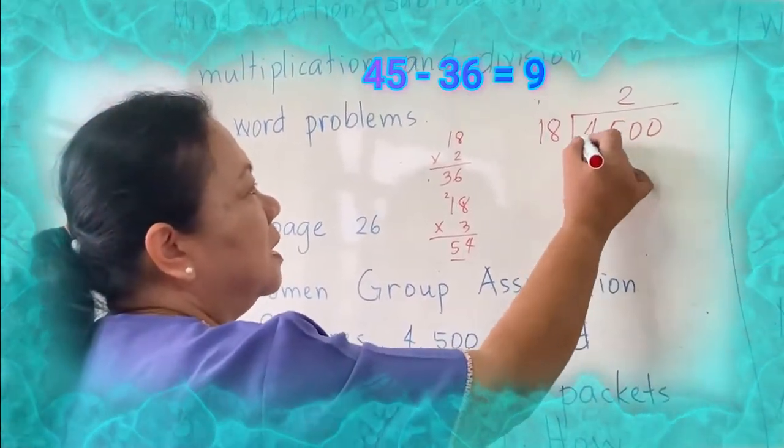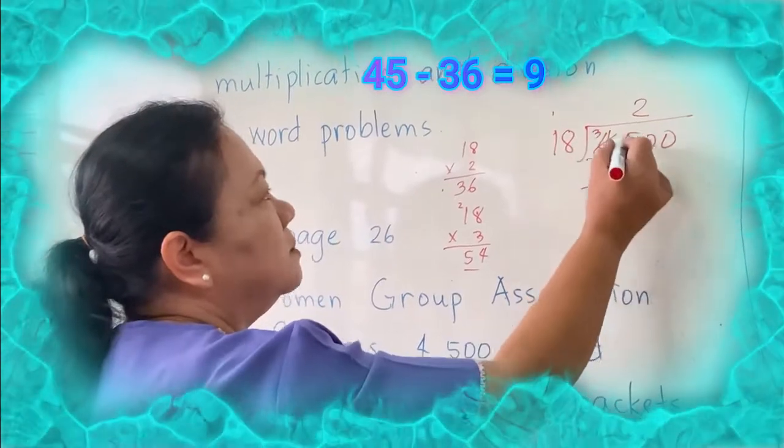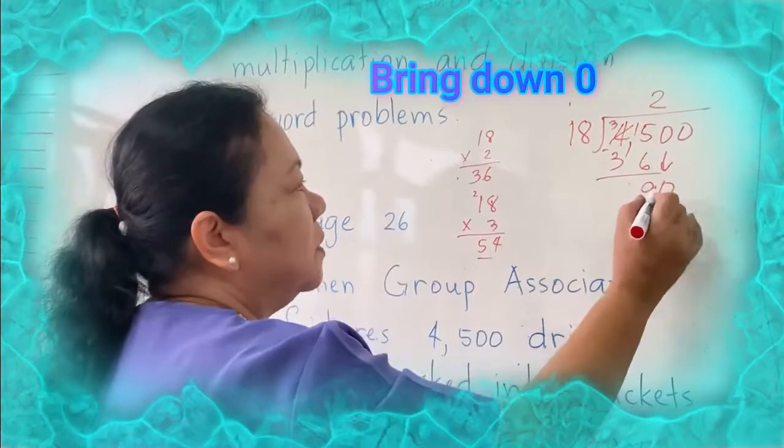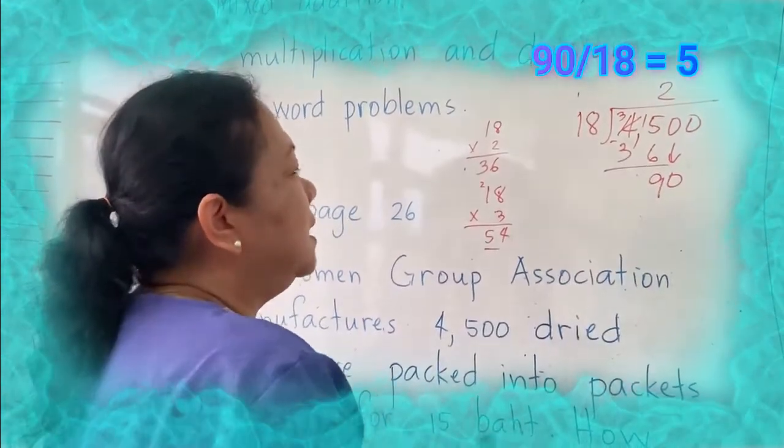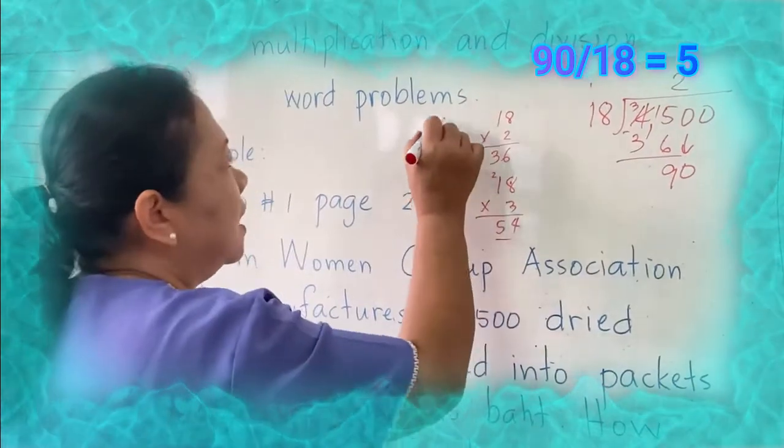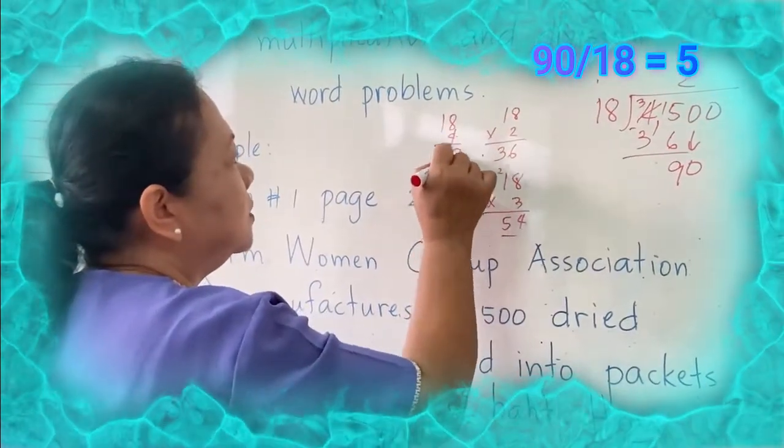5 minus 6 cannot. Borrow 1 from 4. 4 becomes 3, 15 minus 6 is 9. Bring down 0. 90 divided by 18. 18 times 3 is 54. Let us try 4. 18 times 4, 32, carry 3.